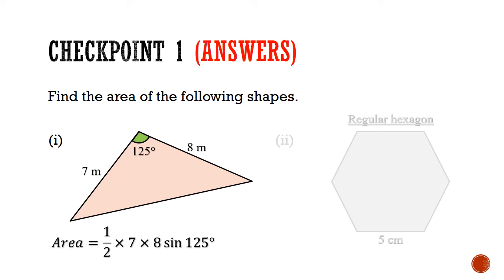Let's now go through the answers. For part 1, it's pretty straightforward. We take half times 7 times 8 times sine of the included angle which is 125 degrees. This gives us a value of 22.9 meters squared.